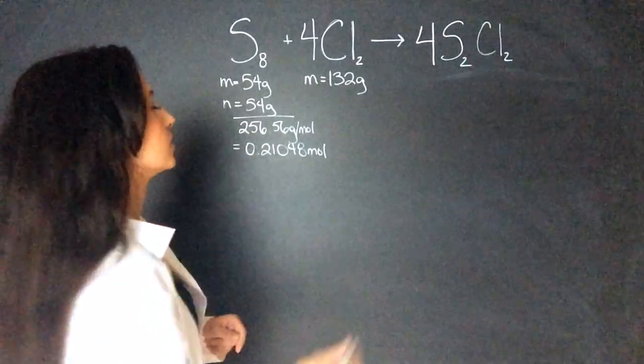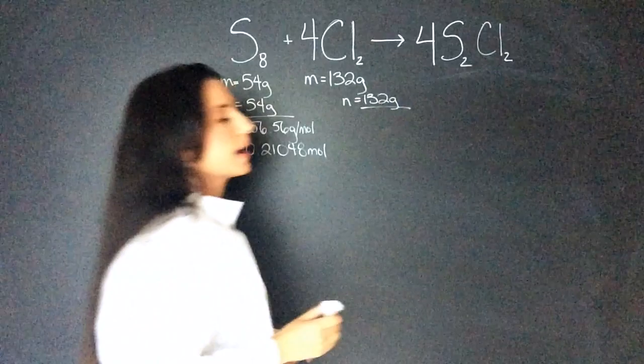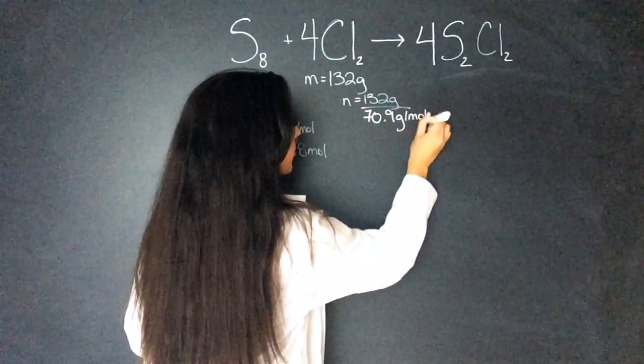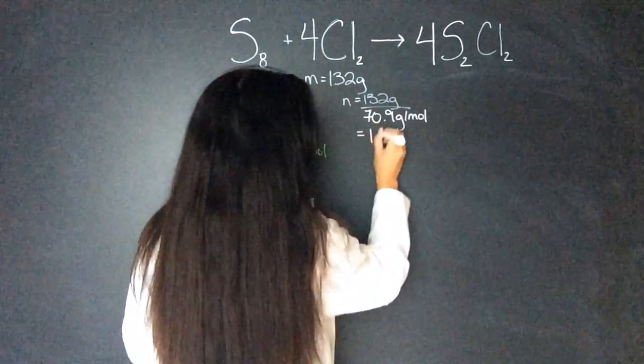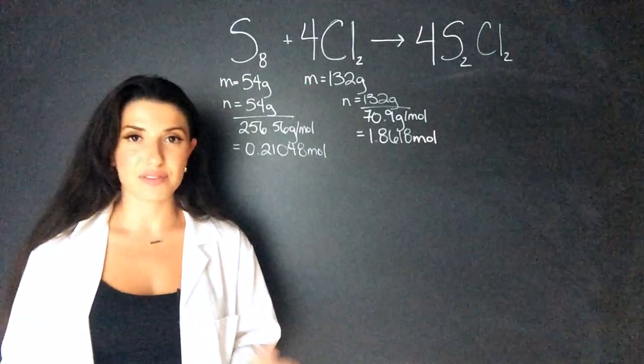Now for the moles of chlorine, I have 132 grams divided by 70.9 grams per mole. And that gives me 1.8618 moles. So now I have the moles.